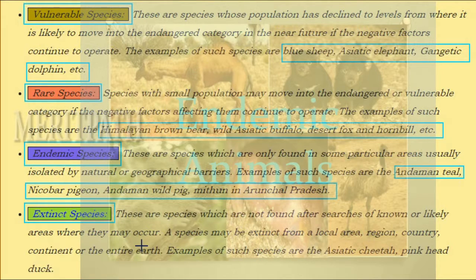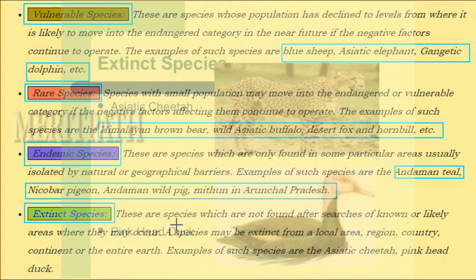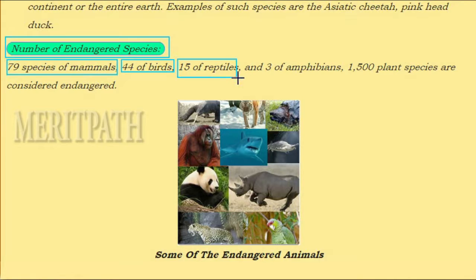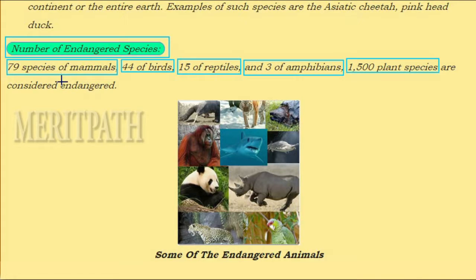Extinct species are those no longer found — a species may be extinct from a local area, region, country, continent, or the entire earth. Examples include the Asiatic cheetah and pink-headed duck. In India there are 79 species of endangered mammals, 44 birds, 15 reptiles, 3 amphibians, and 1,500 plant species considered endangered.